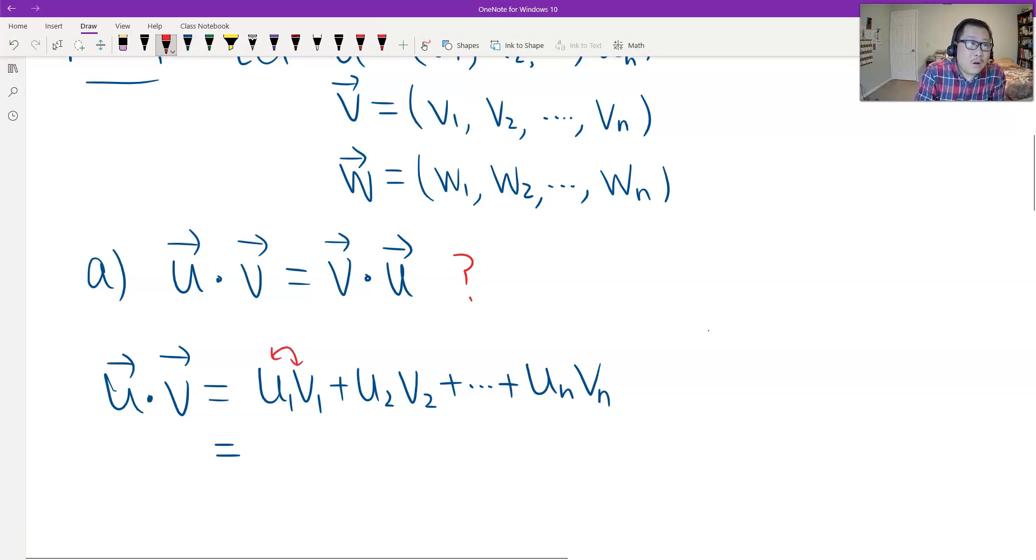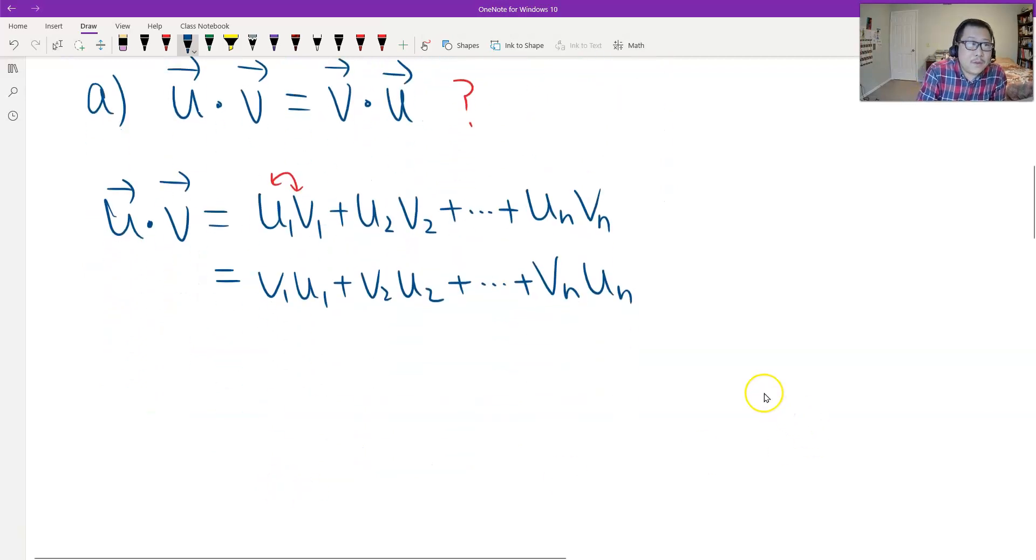And we can just switch the order. See? Easy. Switch the order for each term. So, we have V1 U1 plus V2 U2, dot dot, plus VN UN. So, now, let's see. This should be the sum of product of V and U. So, that's the product of V and U. So, that's the proof for the first. This should be V vector dot U vector. So, that's good for A.